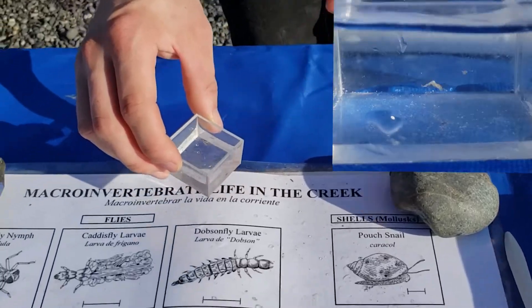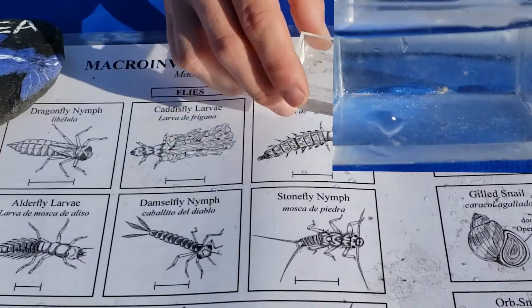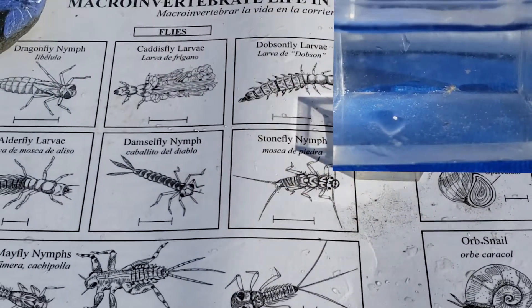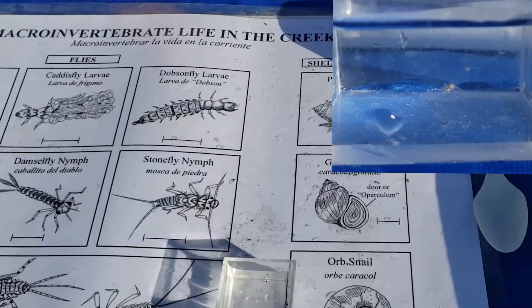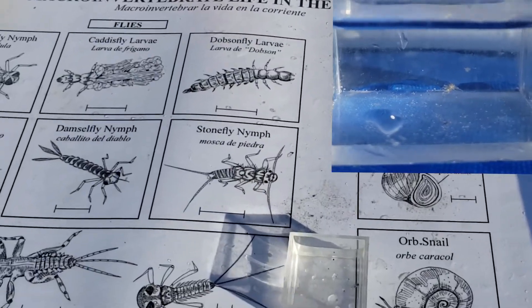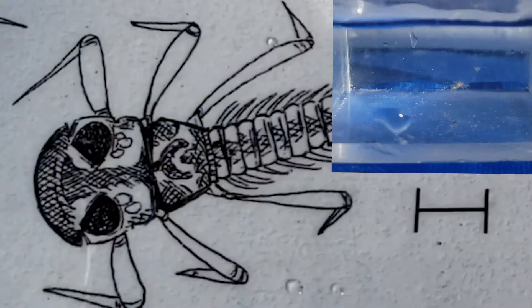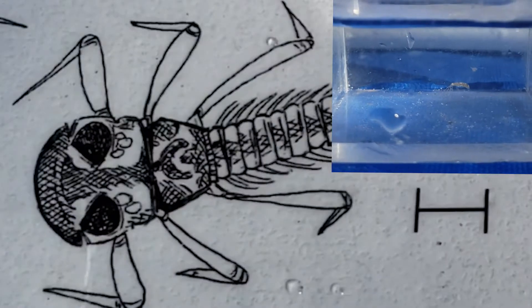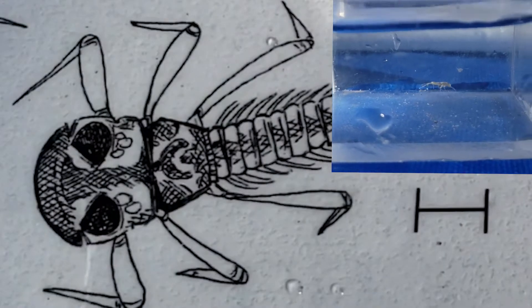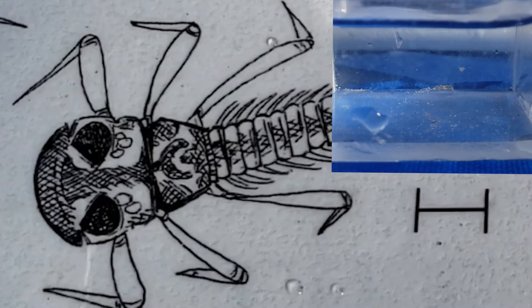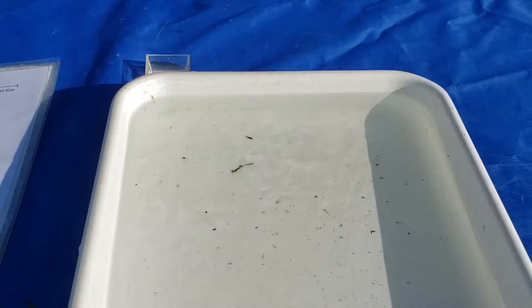Let's identify another one. We're going to use a different type of key to identify this macroinvertebrate. To me, it looks like we have a mayfly nymph. Its head is pretty wide, it has six legs and three tails. It also matches the size description on the key.